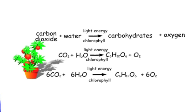Photosynthesis is the process by which green plants use light energy to make their own food. They obtain the raw materials they need from the air and the soil. During photosynthesis, the light energy is absorbed by a green substance called chlorophyll, which is found in chloroplasts in some plant cells.